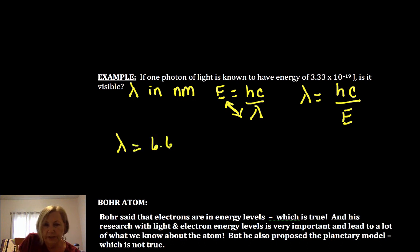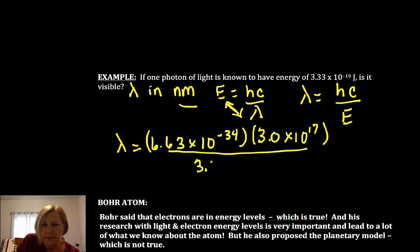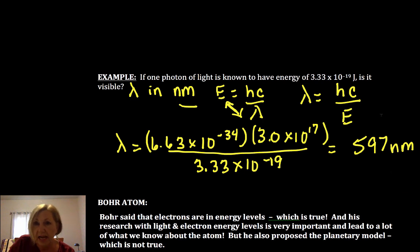So lambda equals that ubiquitous Planck's constant. Now I'm going to use, since I want lambda in nanometers, I'm going to stick with that 10 to the 17th for speed of light. My energy is 3.33 times 10 to the minus 19th. When I solved this one, I got 597 nanometers. I always ask my students to check my math because you never know when I'm going to have one of those Odina moments and calculate it wrong like we all do. In this case, I got 597, and so my answer is yes.